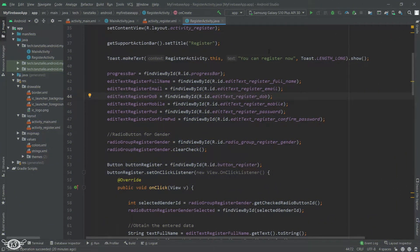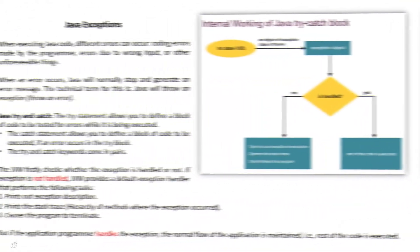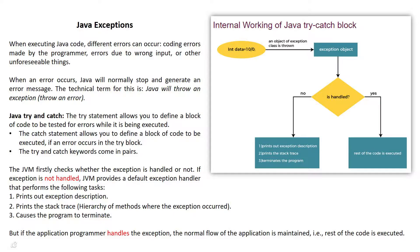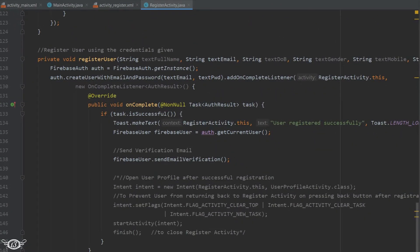Let's start with exception handling in RegisterActivity. Whenever there is any error, Java will stop working and generate some error messages. The technical term used in Java is that Java will throw an exception. To catch exceptions or errors we use try and catch statements.